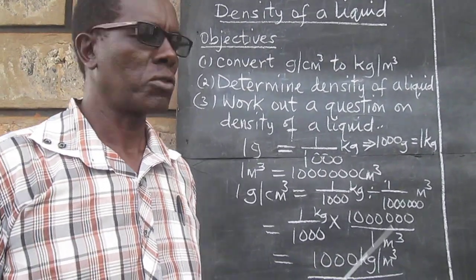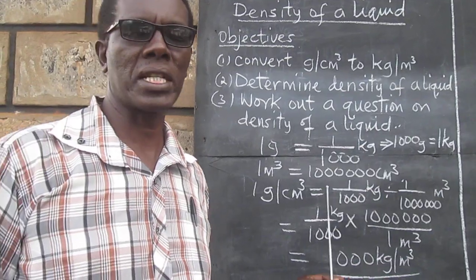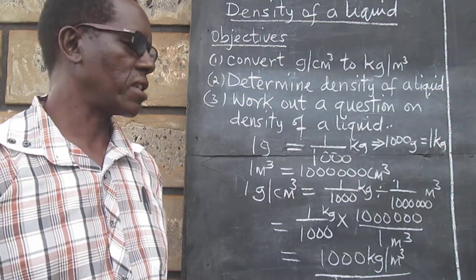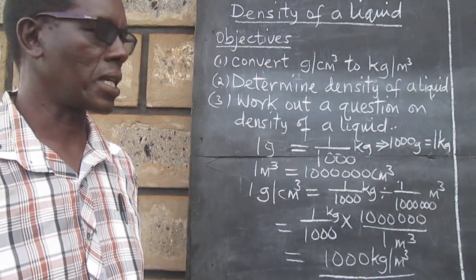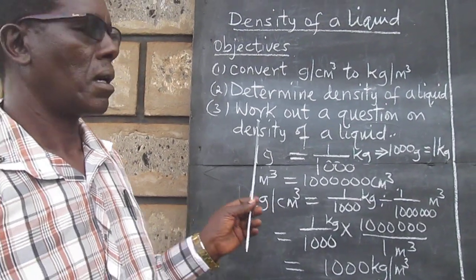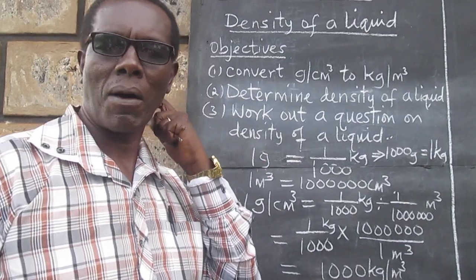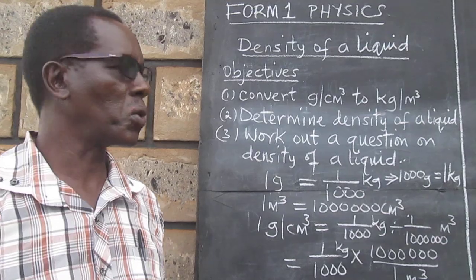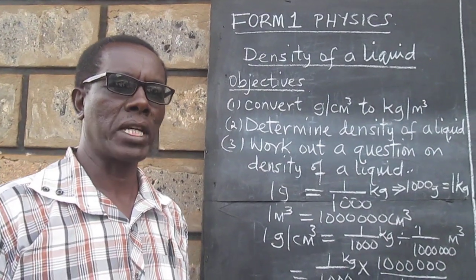In short, to convert gram per cubic centimeter to kilogram per meter cube, all we need to do is multiply by one thousand. We want to move on now to our second objective, which was to explain how we can get the density of a given amount of liquid.